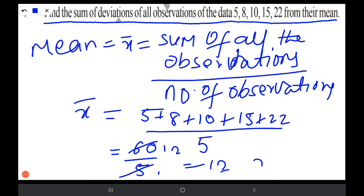5 into 5 is 12. So this is X bar we got here, 12. That is the mean here.